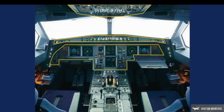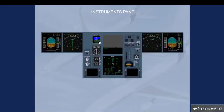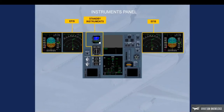Click on the instruments panel area to display it. The instruments panel provides the following information to the pilots: flight information through the Electronic Flight Instrument System (EFIS) and standby instruments; and system information through Electronic Centralized Aircraft Monitoring (ECAM).